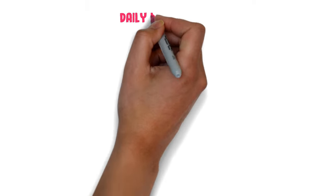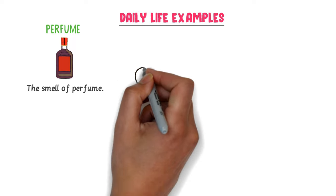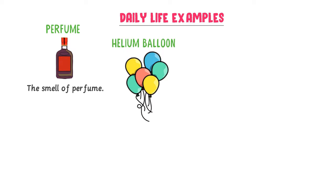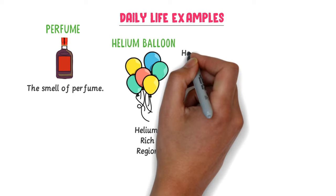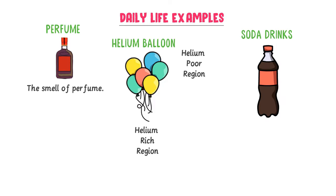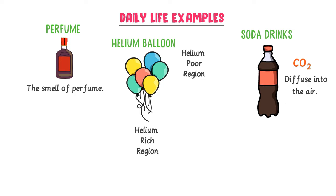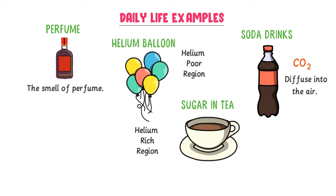Now let me give some examples of diffusion in daily life. First, the smell of perfumes spreads due to diffusion. Second, the upward movement of helium balloons occurs because helium gradually diffuses from a helium-rich region to a helium-poor region. Third, when we open a soda can, carbon dioxide gas diffuses into the air. Fourth, when we add sugar to a cup of hot tea, it slowly dissolves — this is also an example of diffusion.